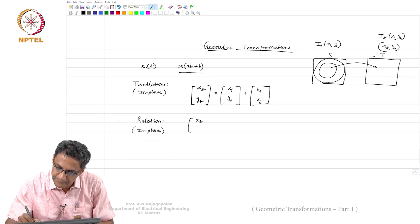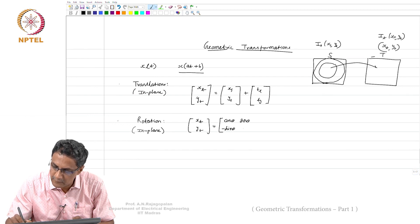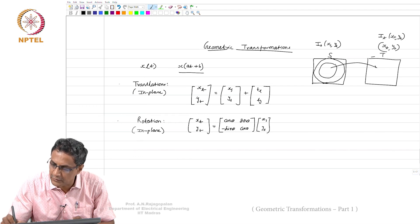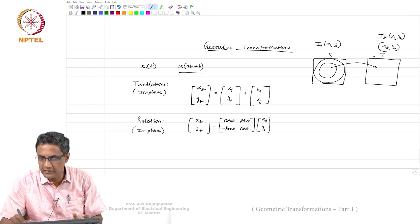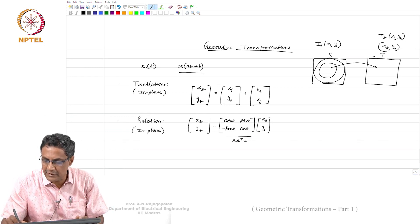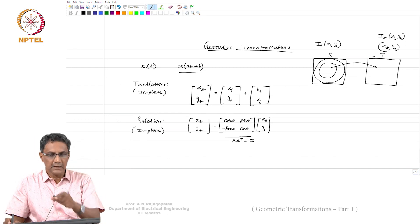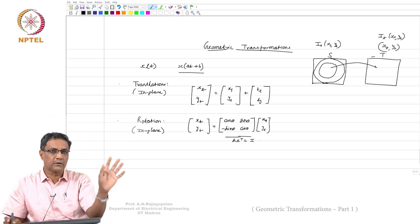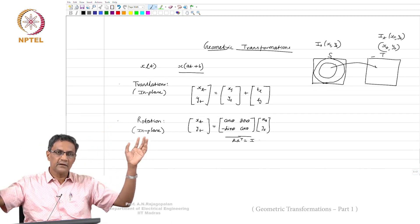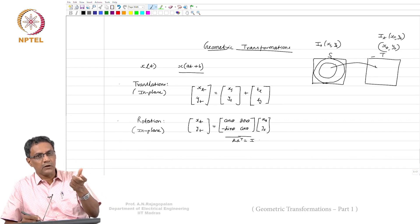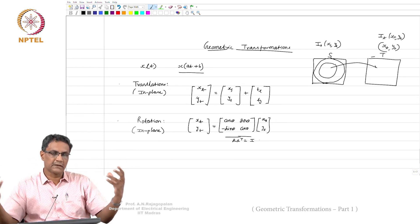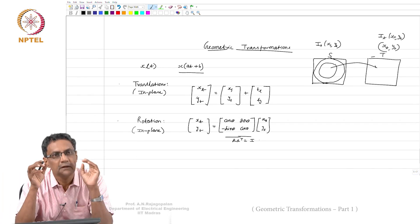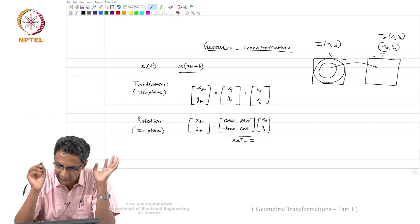So the next case is xt, yt equal to a rotation matrix. Let us say it is simply cos theta, sin theta, minus sin theta, cos theta, times xs, ys. This is a rotation. And you all know that a rotation matrix is orthogonal. So if this is r, then r r transpose is simply identity. Every rotation matrix is an orthogonal matrix. This is a very specific case corresponding to in-plane rotation. But even if you have a complete 3D rotation where you have a sequence of rotations about x, y, z, if you concatenate all of them together, that rotation matrix will also be orthogonal. Any rotation matrix is orthogonal.